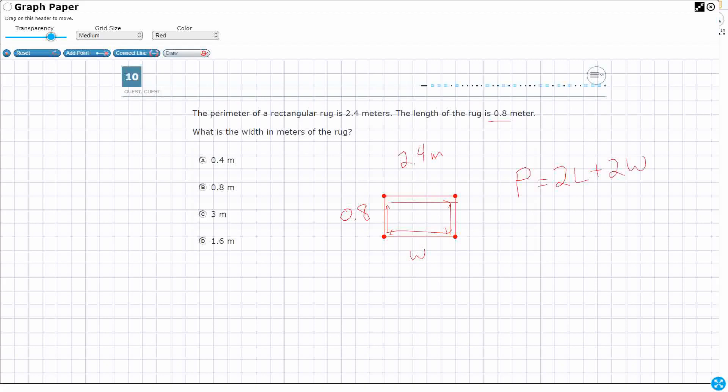Basically what that means is we're going to double the length and double the width. So if we know that the length of this rectangle is 0.8, well then I can say that this is also 0.8. They're both the same thing. And if the bottom is going to be W, then the top is going to be W, because obviously the opposite sides of a rectangle are the exact same length.